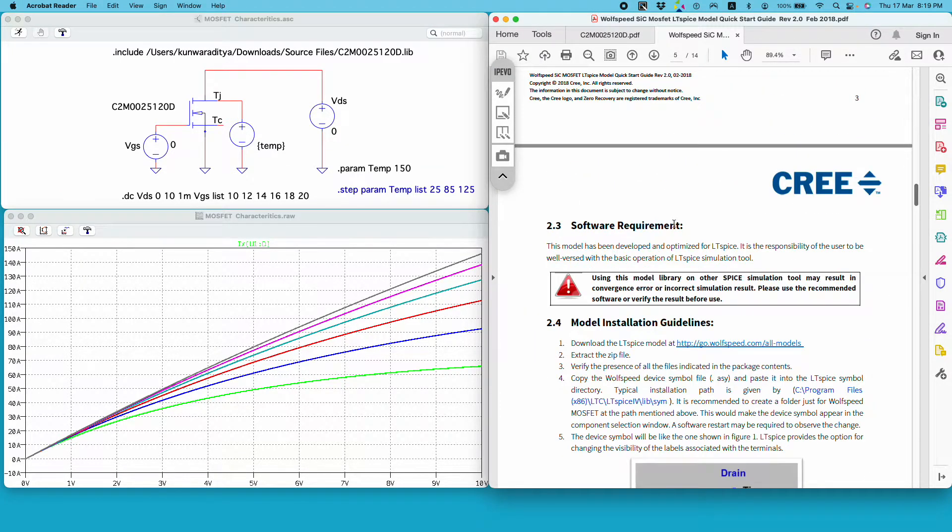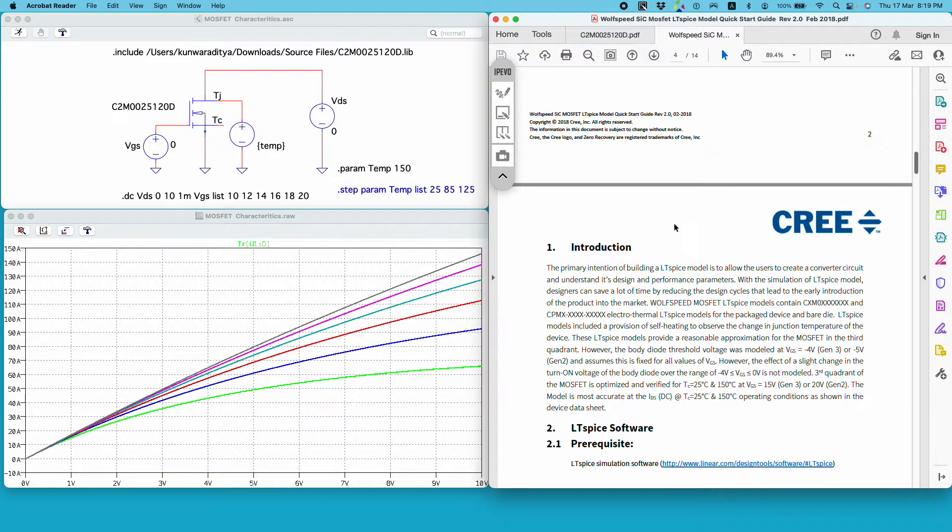If you read here it says the MOSFET is optimized and verified for case temperature of 25 degrees Celsius and 150 degrees Celsius. Clearly I have left the case temperature floating and I'm forcing the junction to stay at 150 degrees Celsius.